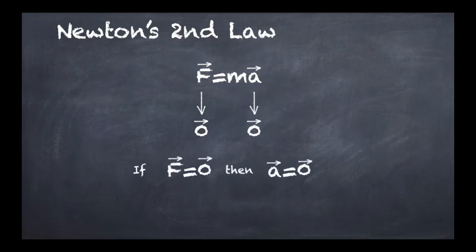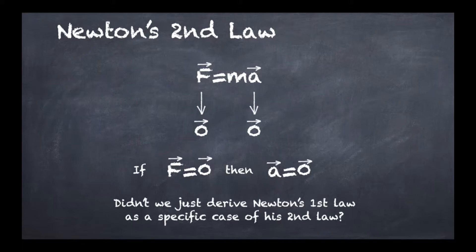What it means in practice is that if F equals 0, then Newton's second law is actually telling me that A equals 0. So we could derive Newton's first law as a specific case of Newton's second law.